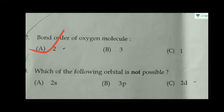Which of the following orbital is not possible? The other orbital is possible. 2s, 3p, 2d. 2s is possible, 3p is possible, 3s, 3p, 3d that's possible. 2s and 2p that's possible. 2d is not possible. Answer is 2d.